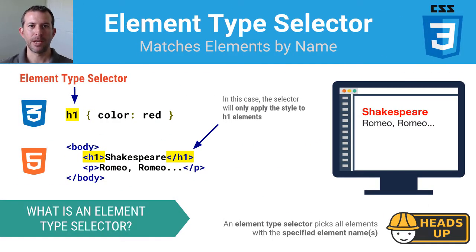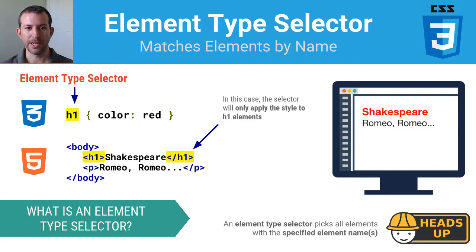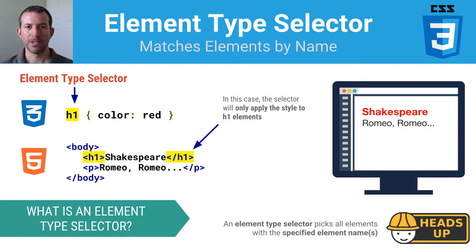Element type selectors are the ones that you're most familiar with. If you want to style all elements of a particular type the same way on a page, you use an element type selector. Here I've created a style rule using an element type selector, selecting all H1 elements and coloring their text red. Notice how only the H1 element has its text colored red. It will pick all elements with that name and apply the style to them universally.